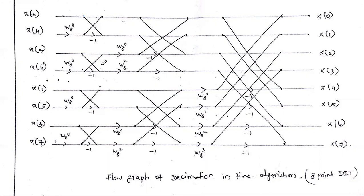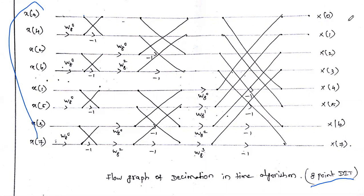In order to draw the 8-point DIT diagram, we have to draw first 8 lines — line 1, 2, 3, 4, 5, 6, 7, 8. So 8 parallel lines we have to draw. In the DIT algorithm, the input is a time domain sequence x(n), and the output is a frequency domain sequence X(k). The output sequence is in natural order: X(0), X(1), X(2), X(3), X(4), X(5), X(6), X(7).